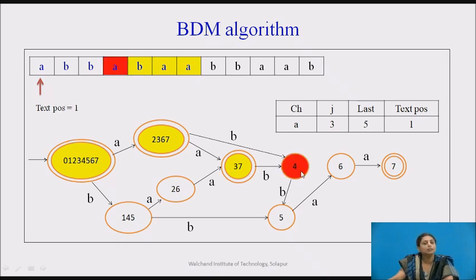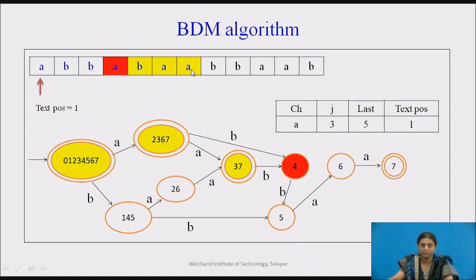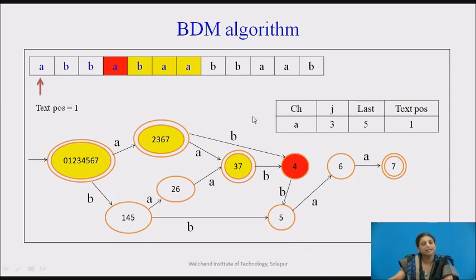Since there is no transition from state 4 for input 'a', we must shift the window. The last stored position is 5, meaning 'aab' (processed right to left) is the longest suffix found. The next text position becomes the current text position plus 'last', which equals 6. We shift the window to the right by that many positions.